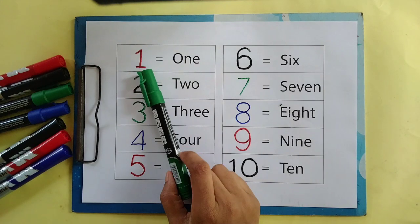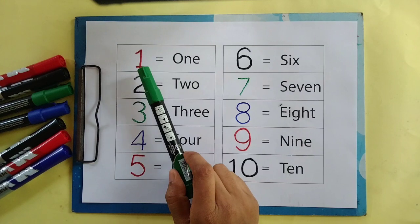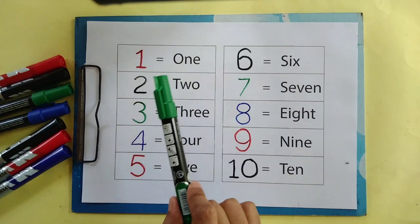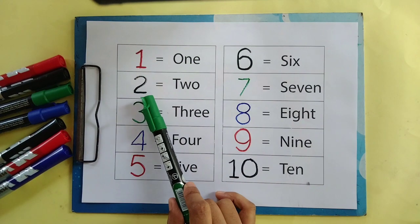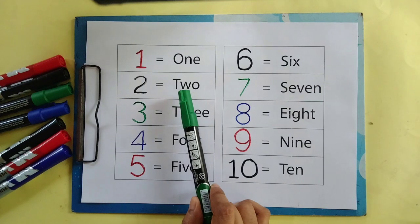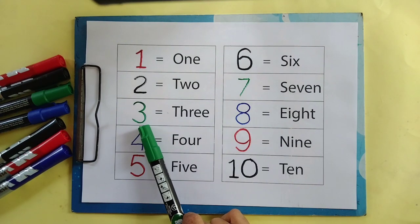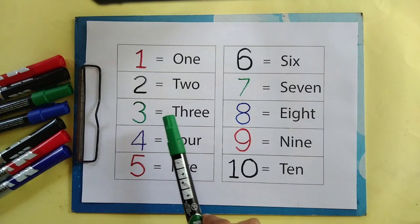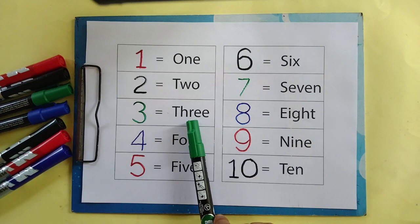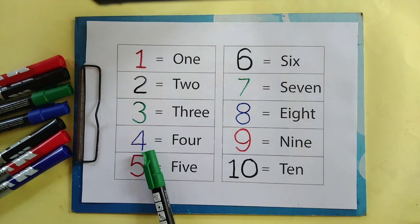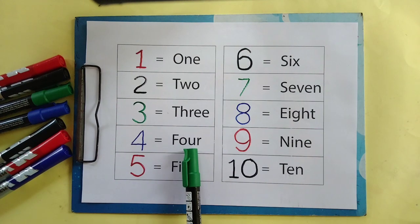Red color 1. O-N-E 1. Black color 2. T-W-O 2. Green color 3. T-H-R-E-E 3. Blue color 4. F-O-U-R 4.